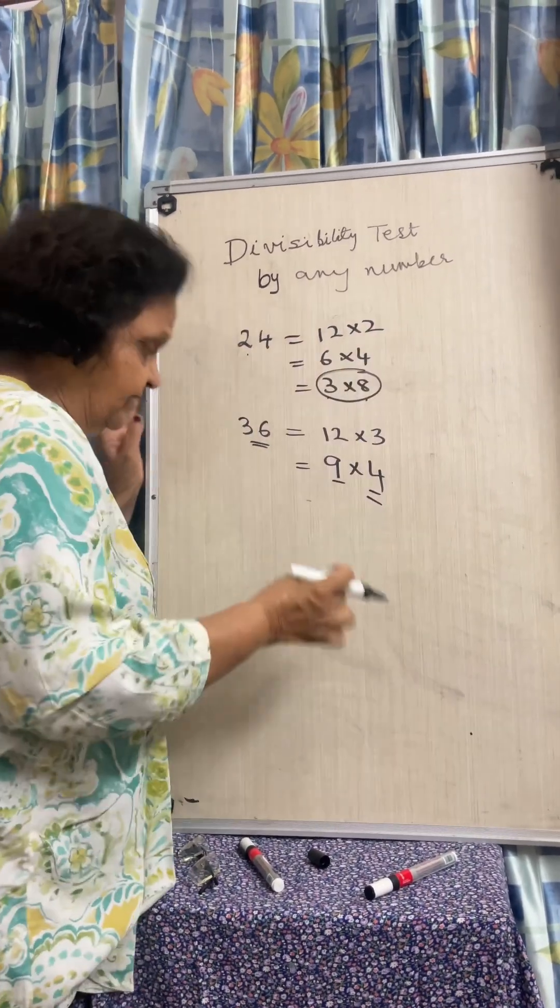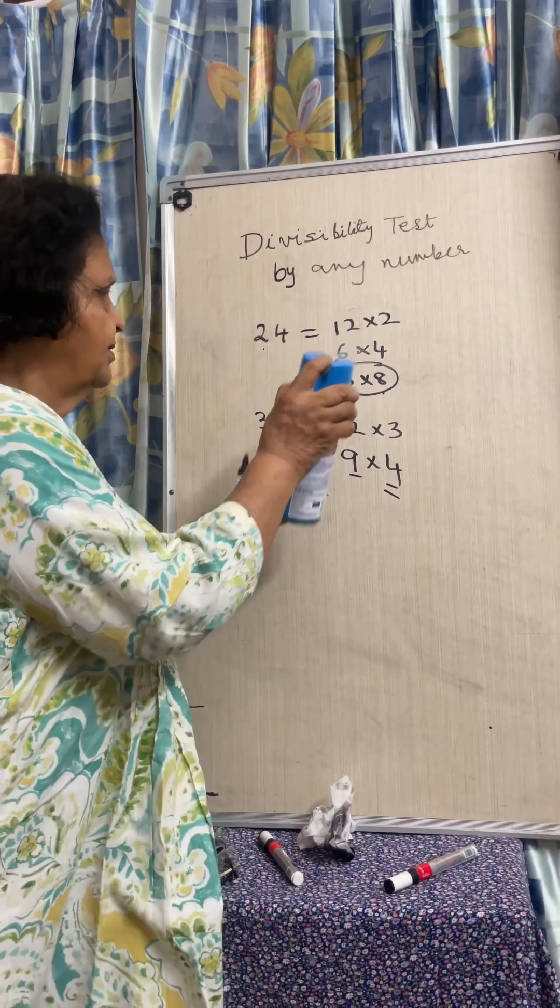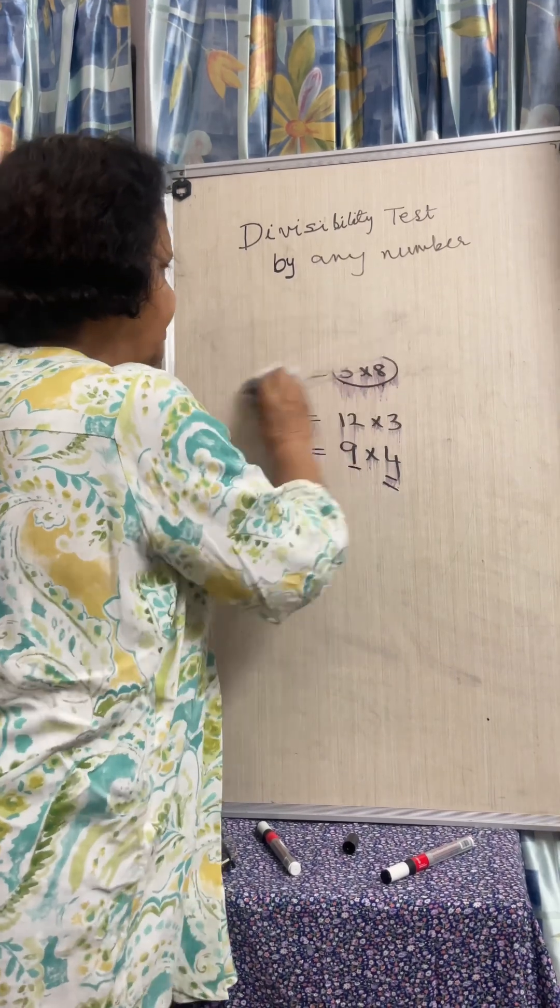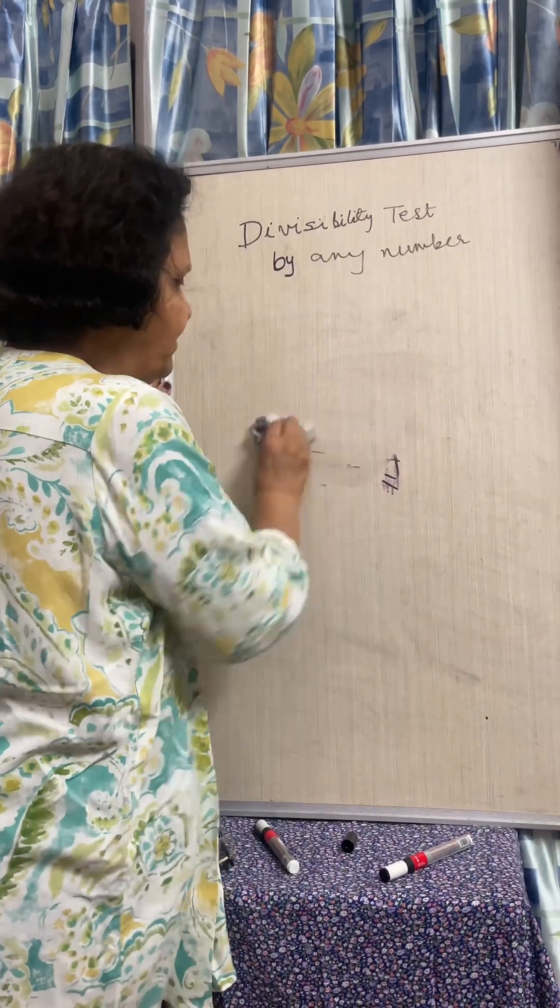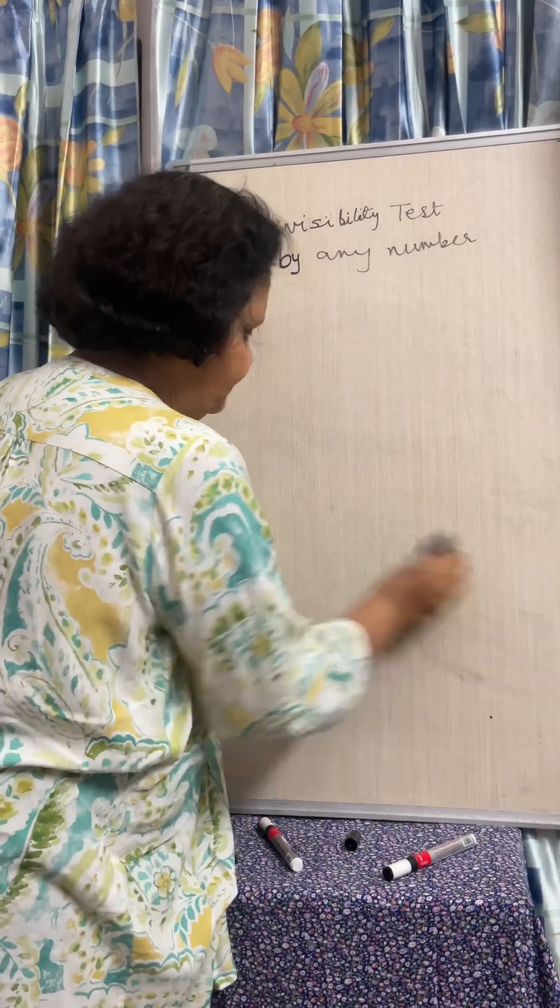So what is the result that we get? First, what are co-prime numbers? Co-prime numbers are those where the highest common divisor is 1. 1 is the only common factor that they have.